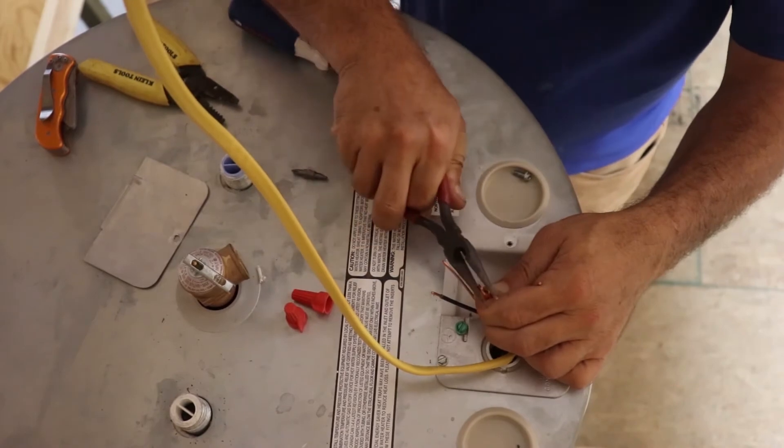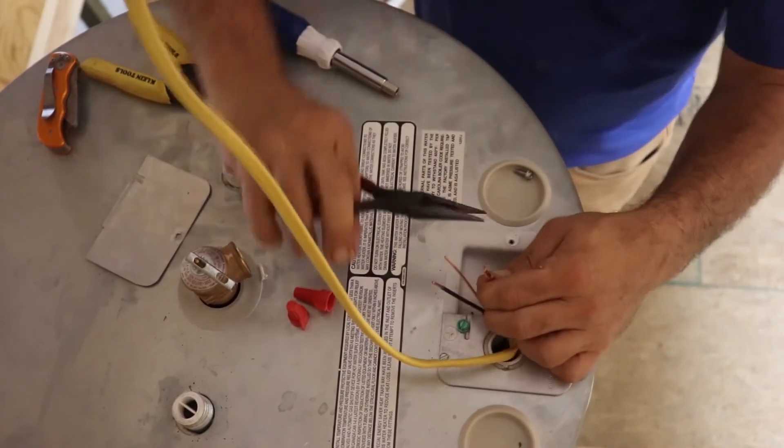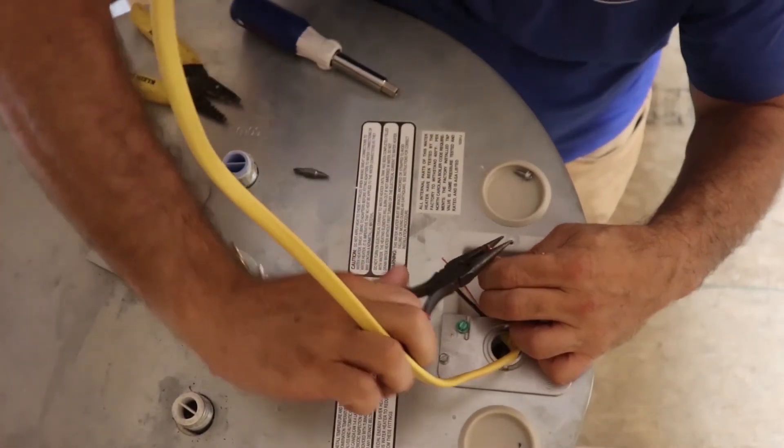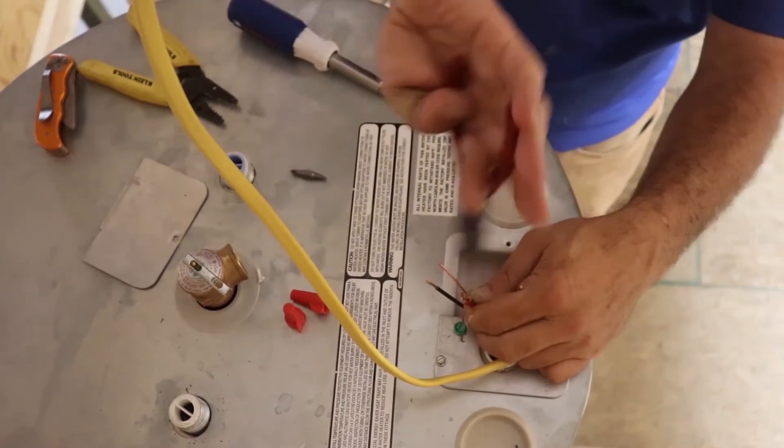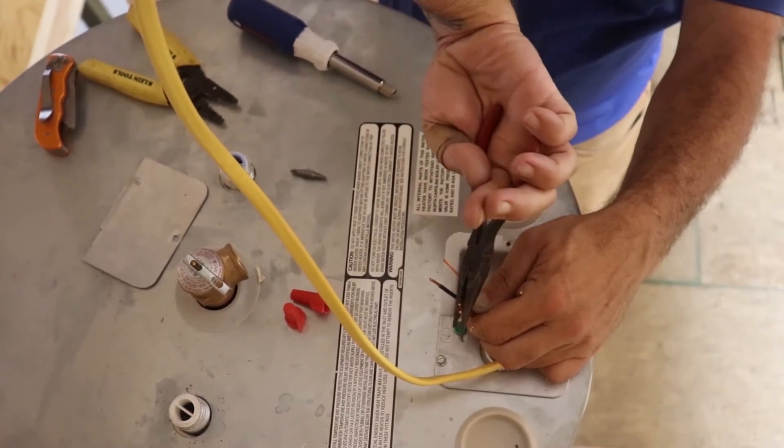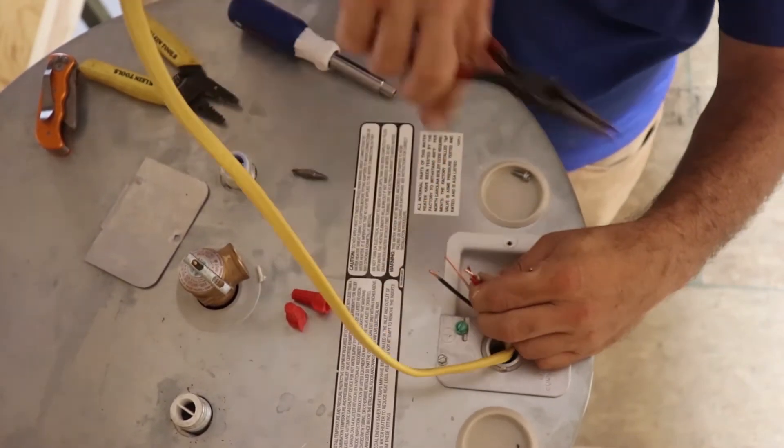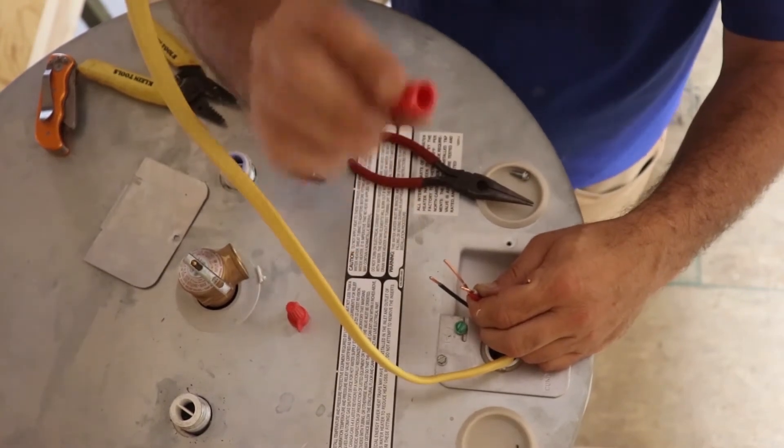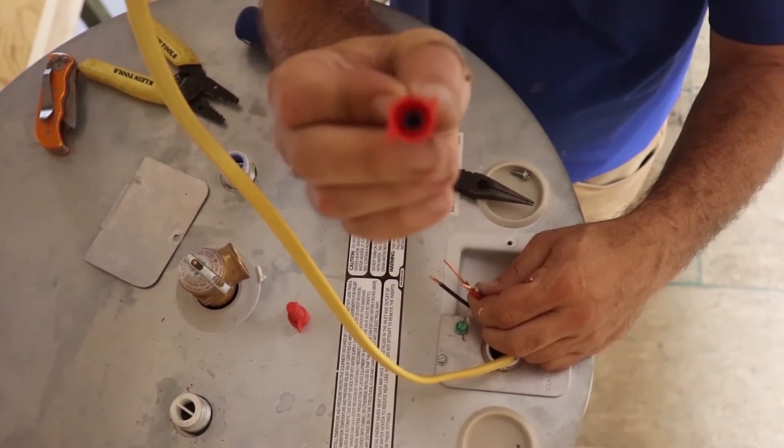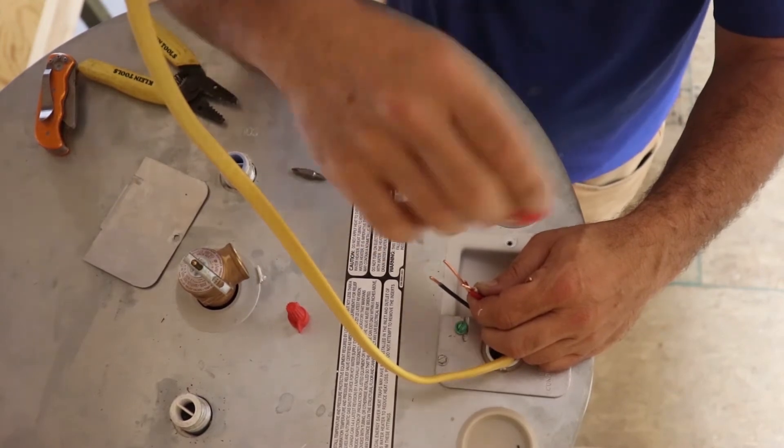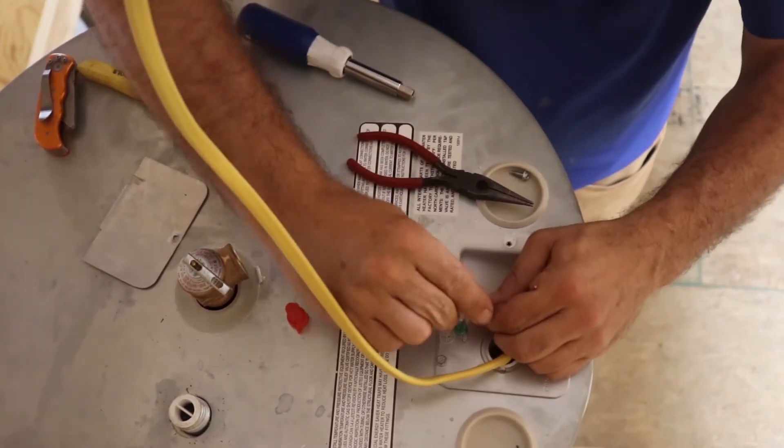And these wires are kind of tough, so get your needle noses out. You can even use your channel locks if you wanted to, but just any old plier. Give it a little twist. This just helps twist it together like that. Get your wire nut. Now this has got a little metal spring inside there and it kind of works like threads.